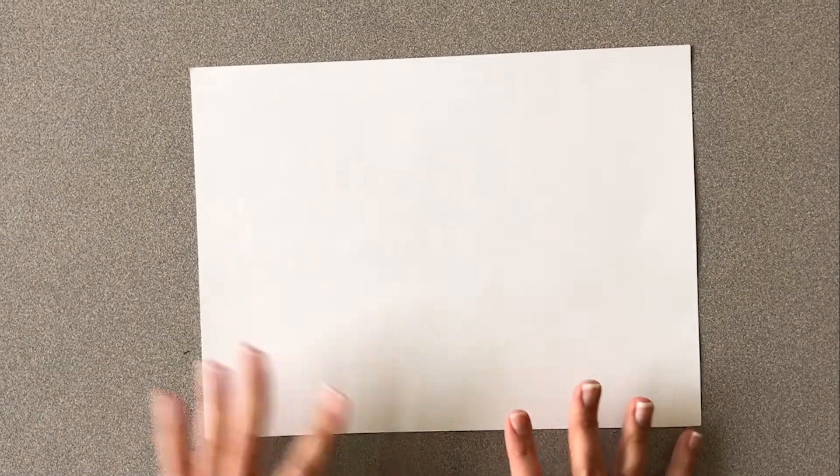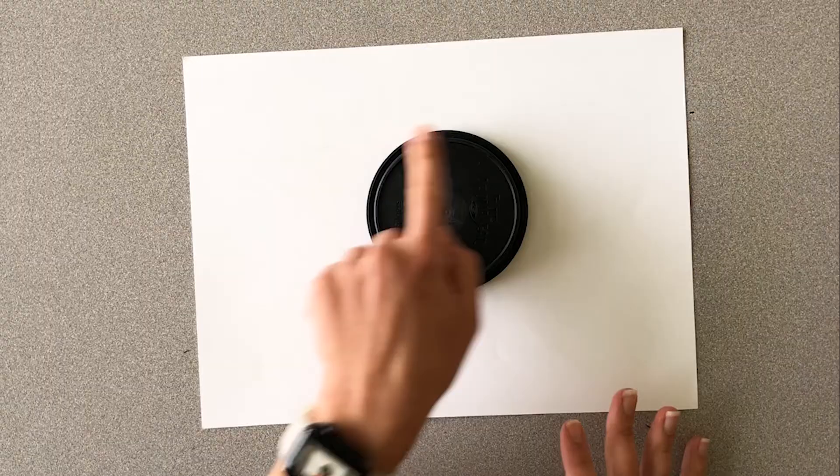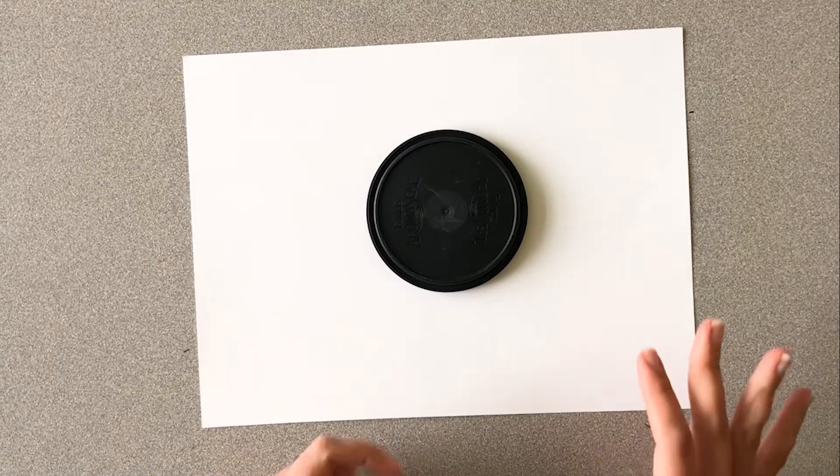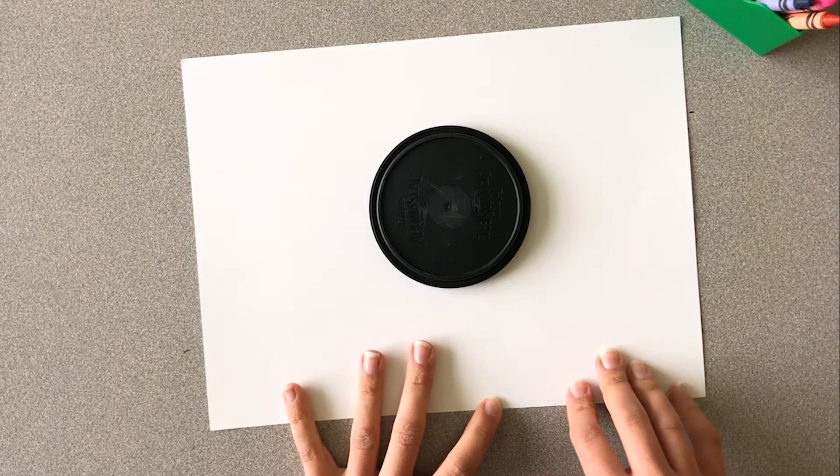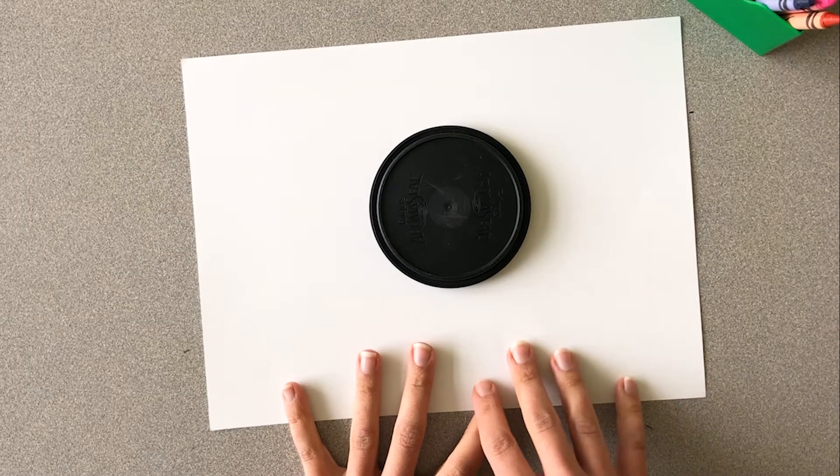To get started you need a piece of paper and then maybe try to find a nice kind of big lid you have around your house, and I hope you have some crayons. If you have markers or watercolor paint, you can also use those for this project as well.